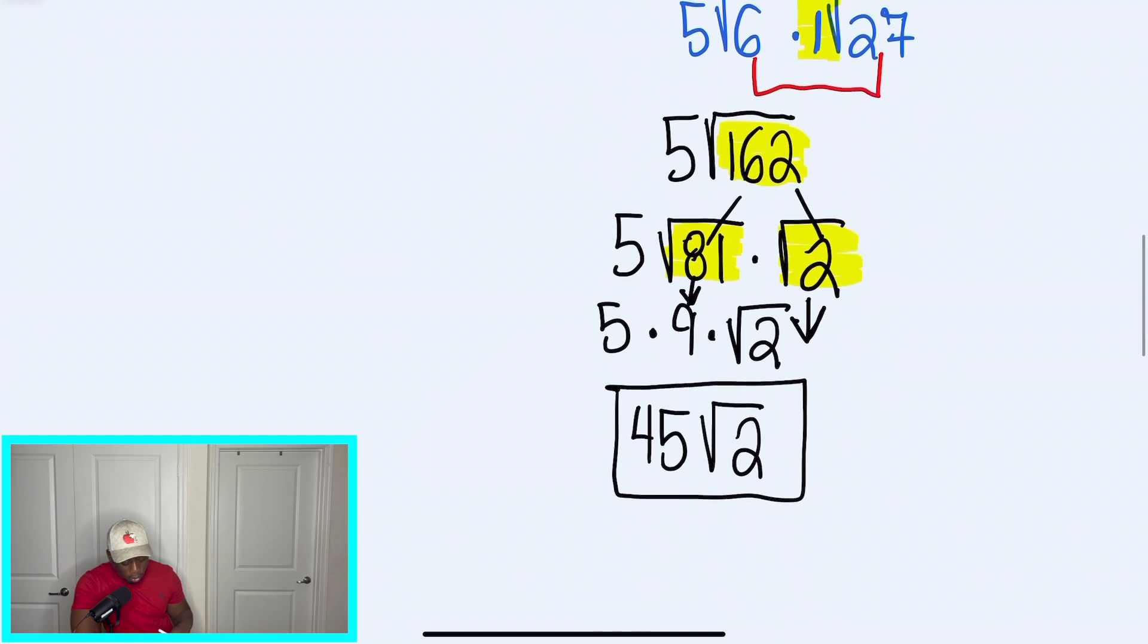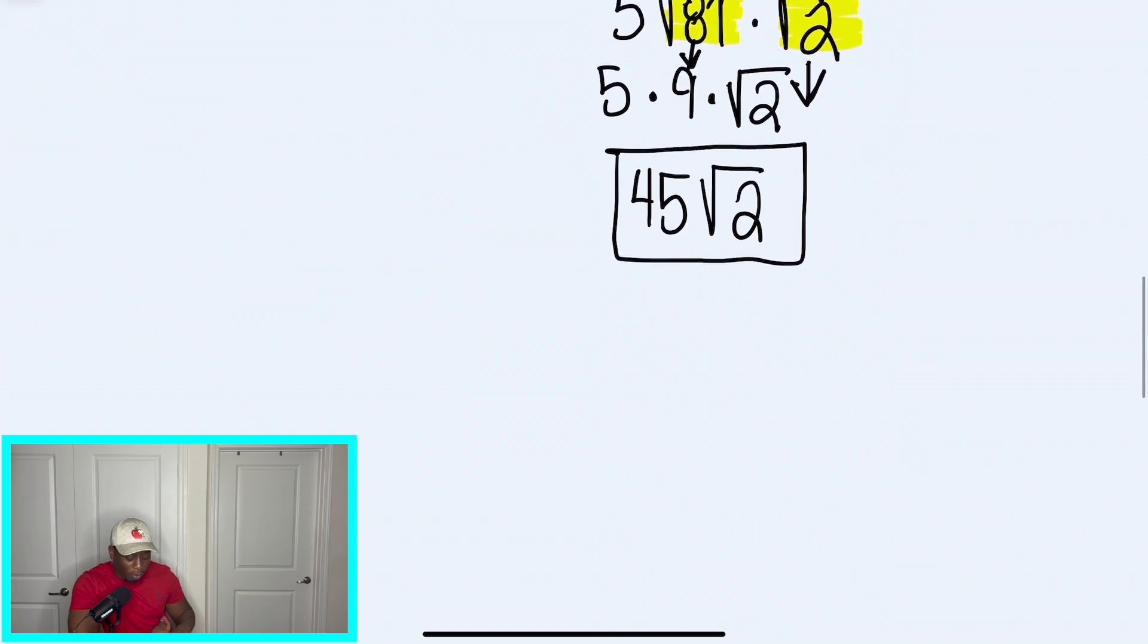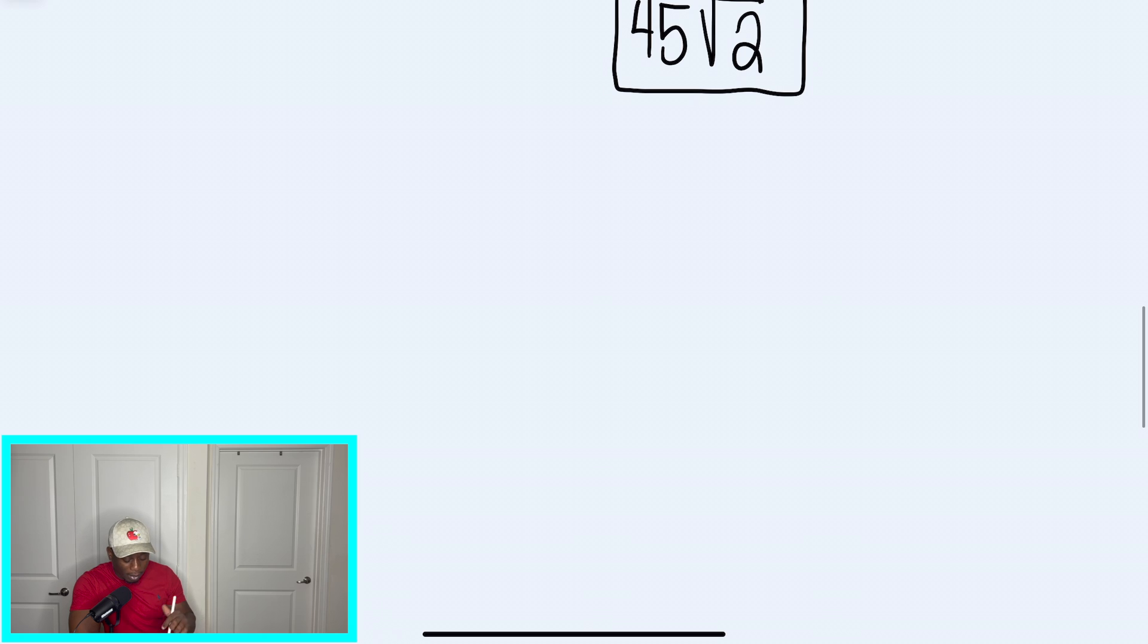In our last problem, we're going to have one where both our radicals are going to have a coefficient. And we'll have 7 radical 8. And we're going to multiply that by 2 radical 6. So I'm going to play around with this one a little bit. I'm not going to highlight everything. I'm going to see if you guys can follow along with me.